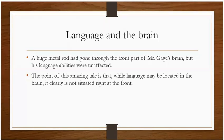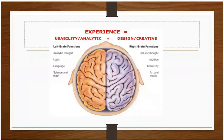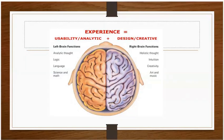If you look at an image of the brain taken from the top — as if the skull has been removed — you can see two parts: the left brain and the right brain, or we can call them the left hemisphere and the right hemisphere.